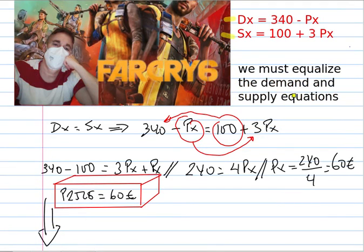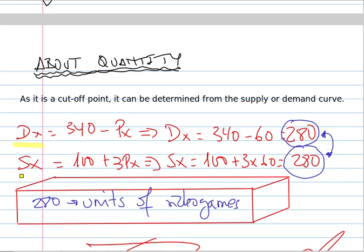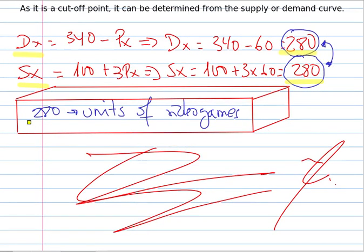First of all, we must equalize the demand and supply equations like this. And now, with easy math operations, we see the equilibrium price is about 16 EUR. And about quantity, as the cutoff point, it can be determined from either the supply or demand curve. After that, we can see that the quantity is the same whether determined by demand or by supply: 218 units of video games.